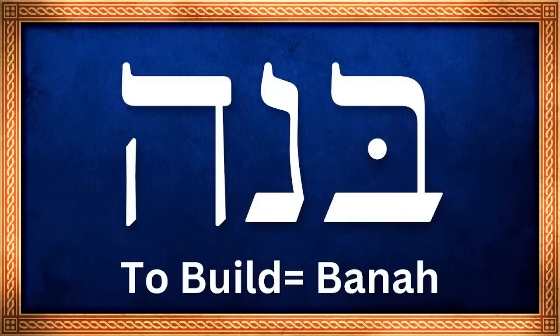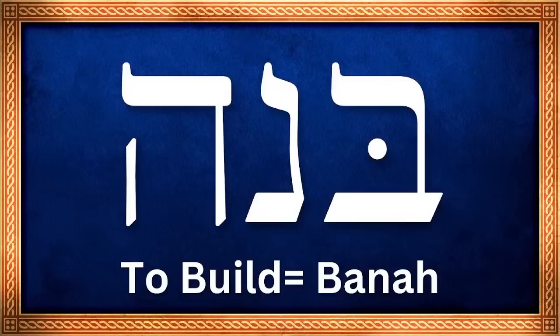God speaks here to Moses and says, 'I want you to build this. I want you to make a sanctuary, an established place, that I may dwell — that I may come and sit and not leave among you.' It's according to the pattern — a very specific building blueprint. Basically what God is saying is: 'I have a blueprint for you,' just as a construction worker would have blueprints — very specific instructions. God is about to give Moses the very specific instructions for his house.